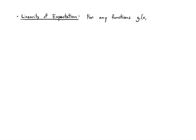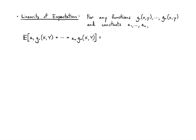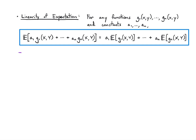As before, I have the linearity of expectation. For any functions g1 up to gn — so I have n different functions and some constants a1 up to an — if I sum up these functions weighted by these constants and then take the average, I can break that up into the individual averages of these functions, weighted by these constants. This is a generalization of the idea of linearity of expectation that we've seen before.